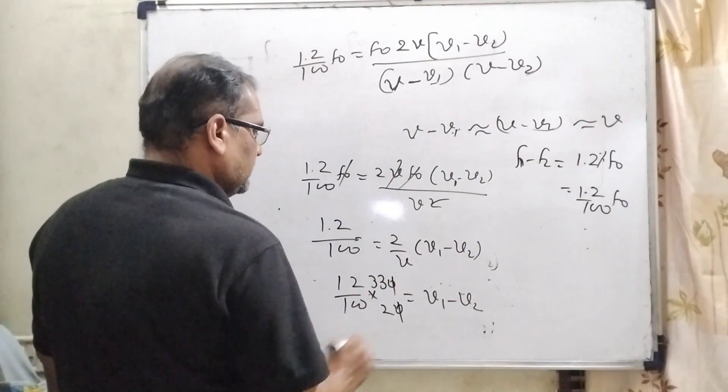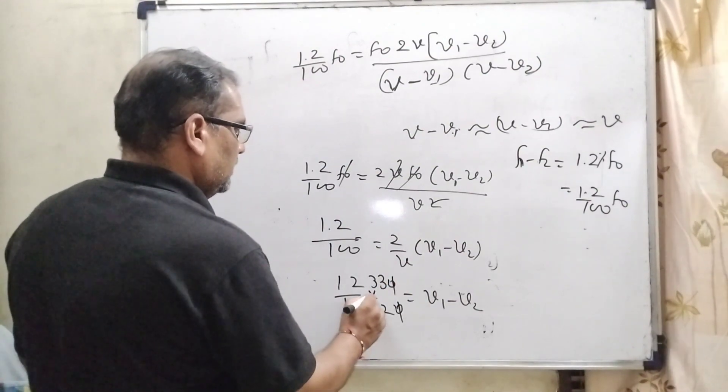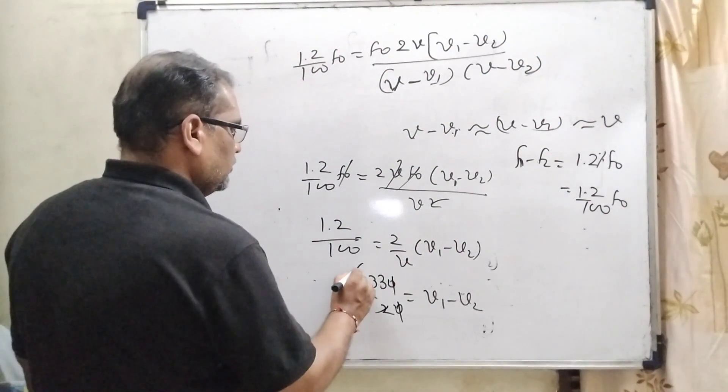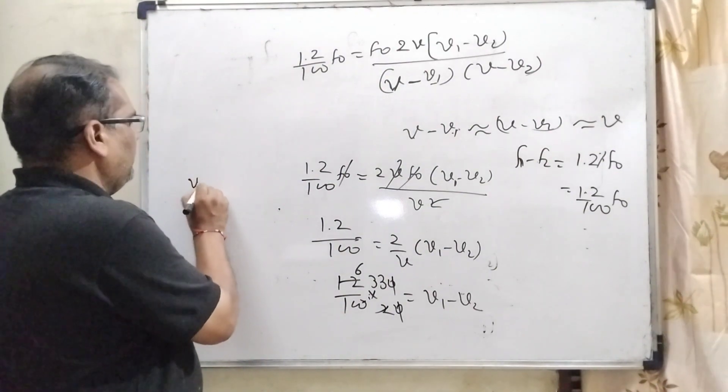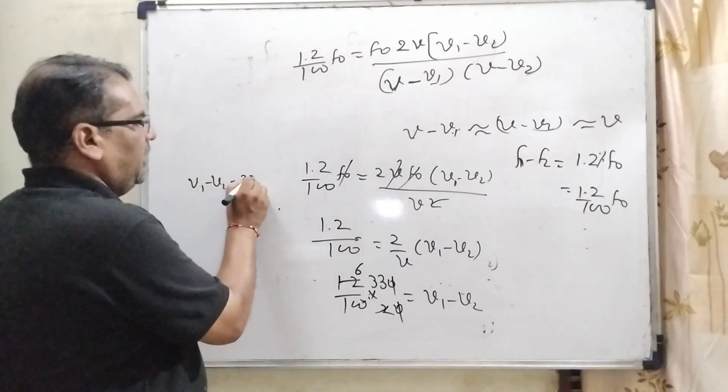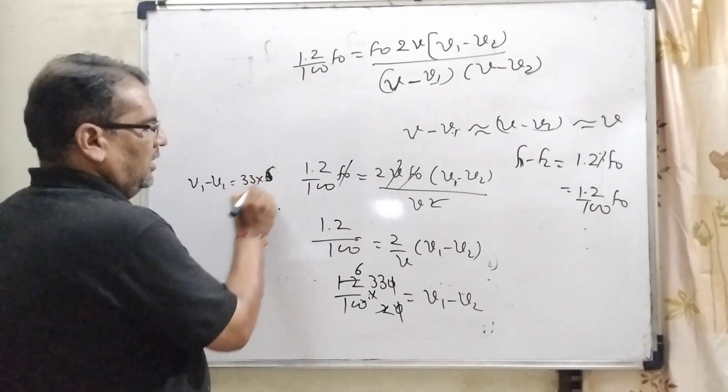Zero zero cancel out, 2 times 12 is 24 and 33, here V1 minus V2 equal to 33 into 3 times 6 upon 100.